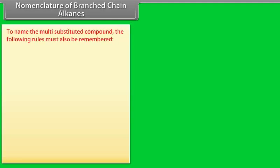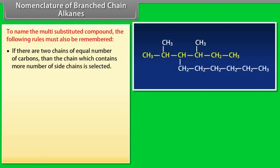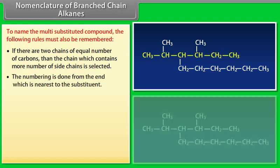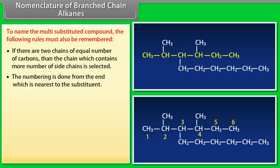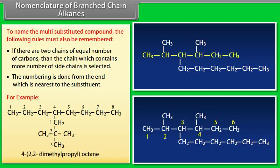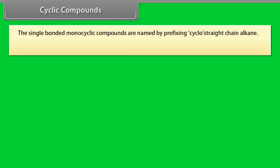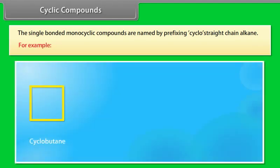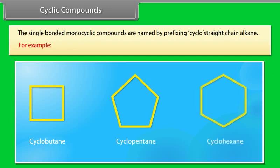To name multi-substituted compounds, if there are two chains of equal number of carbons, then the chain which contains more number of side chains is selected. The numbering is done from the end nearest to the substituent. For example, the IUPAC name of the given compound is 4-(2,2-dimethyl-propyl)-octane. Single-bonded monocyclic compounds are named by prefixing cyclo to the straight-chain alkane name. For example: cyclobutane, cyclopentane, cyclohexane.